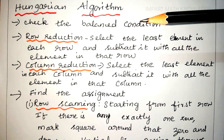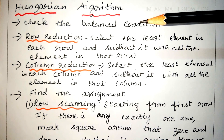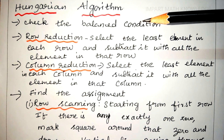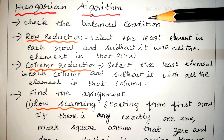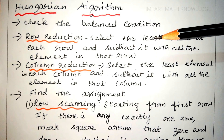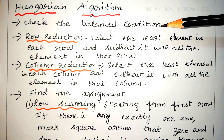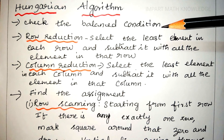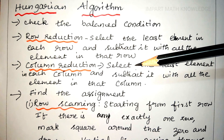The next topic is the Hungarian algorithm. This method is used to find the optimum assignment schedule, minimum processing time, or minimum assignment cost. For that, first you have to check the balance condition — that is, whether the number of rows is equal to the number of columns or not.